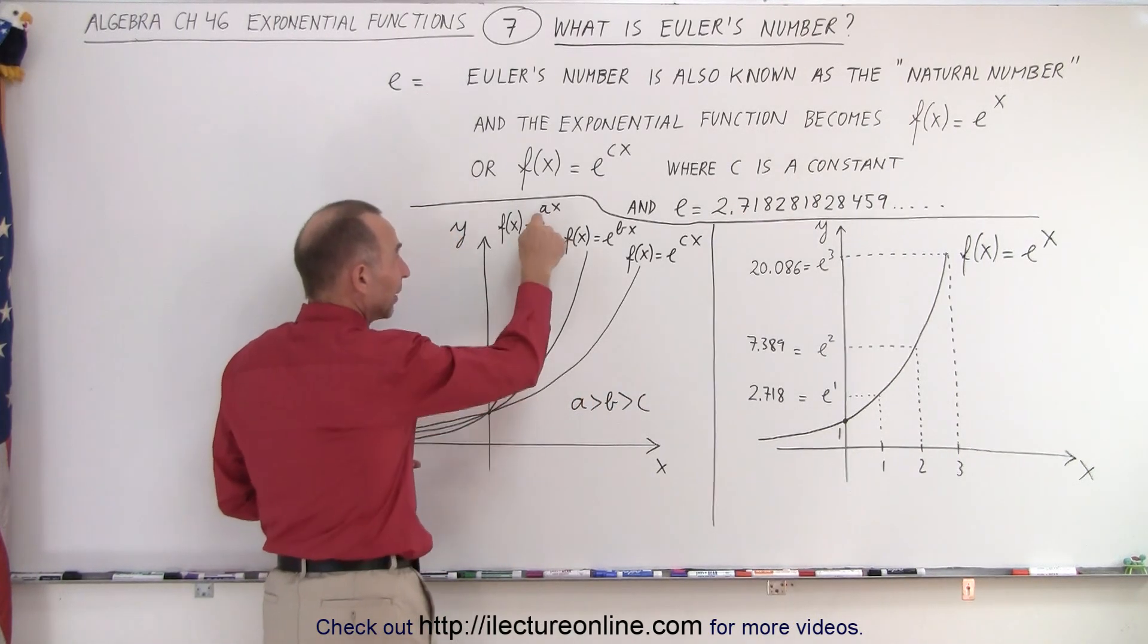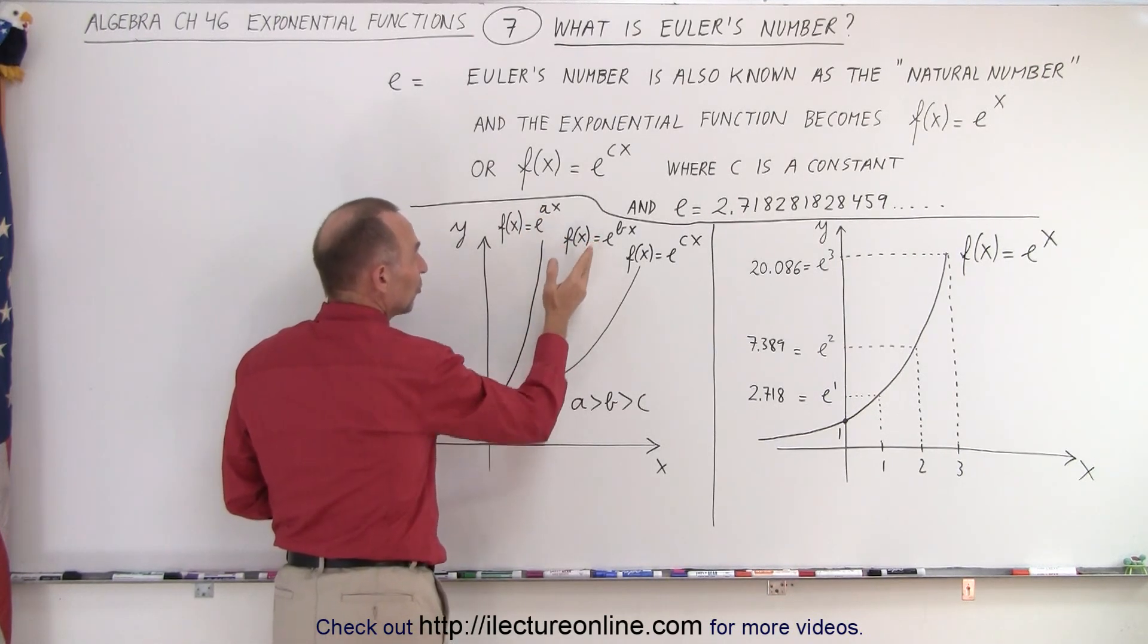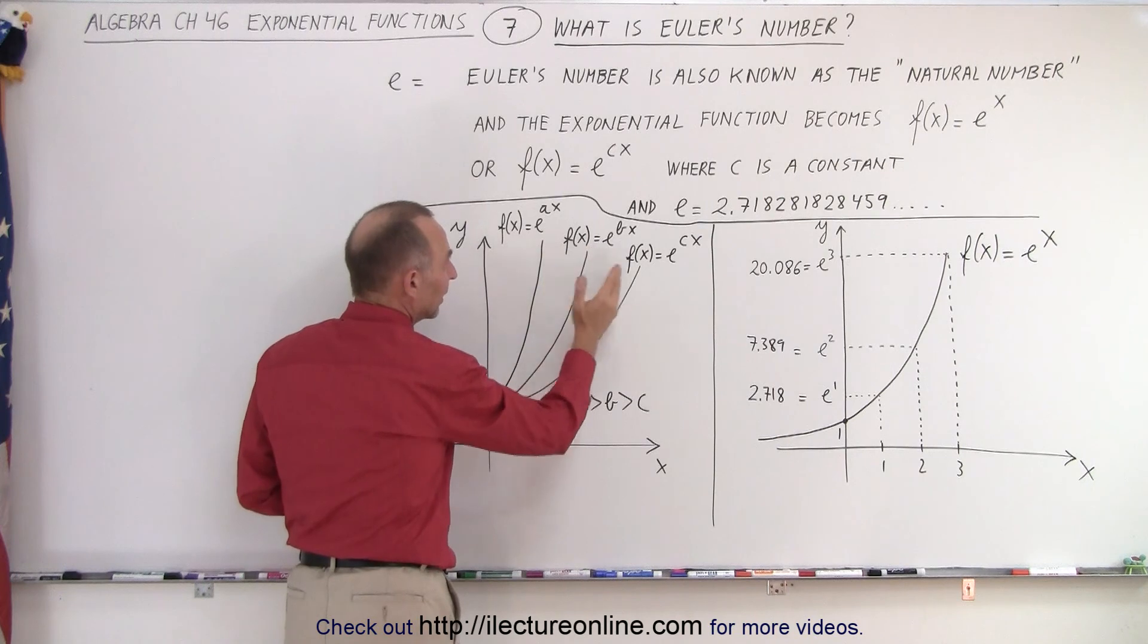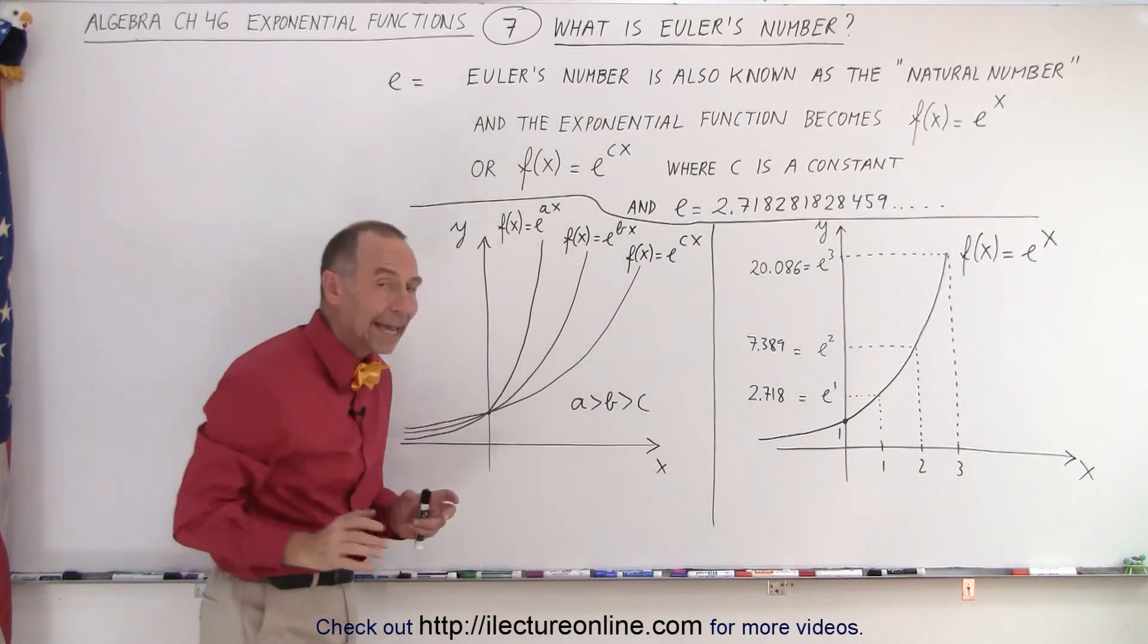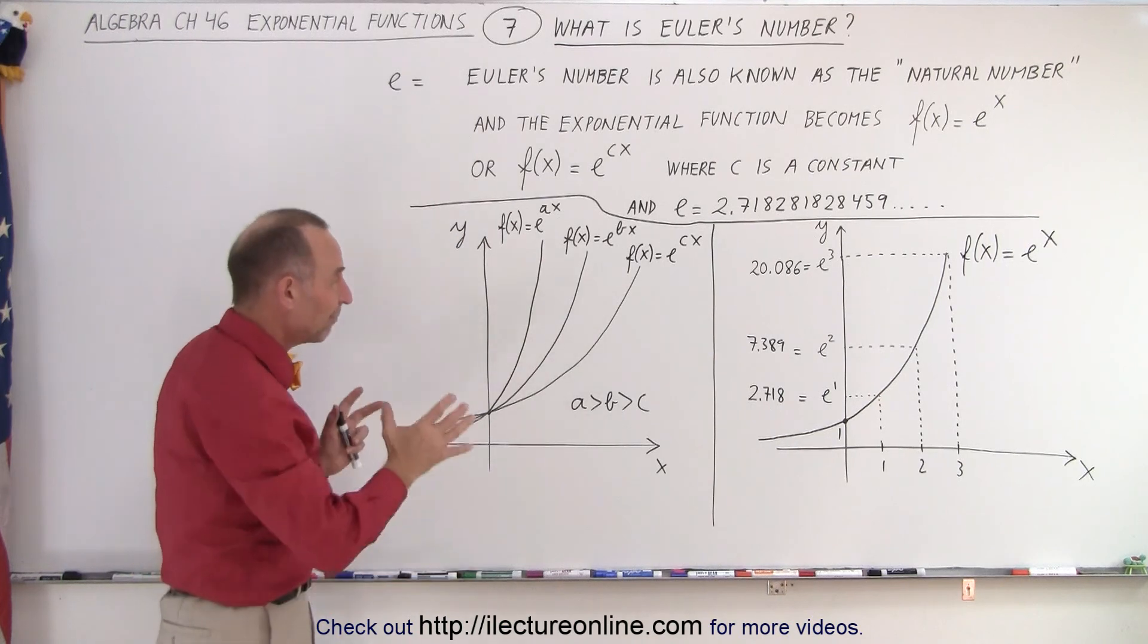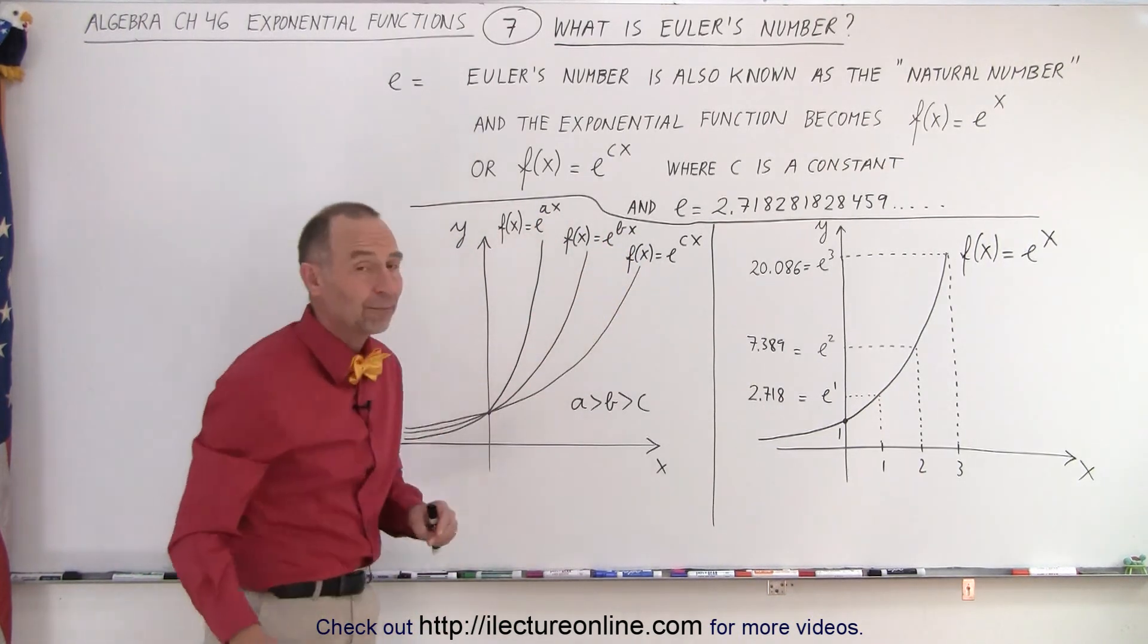So, you can see if you put a bigger constant in front, the function grows more quickly. If you put a smaller constant, it grows less quickly. An even smaller one, it grows less quickly again. So, that gives you a feel of what that function looks like depending upon what constant we put in front of the x.